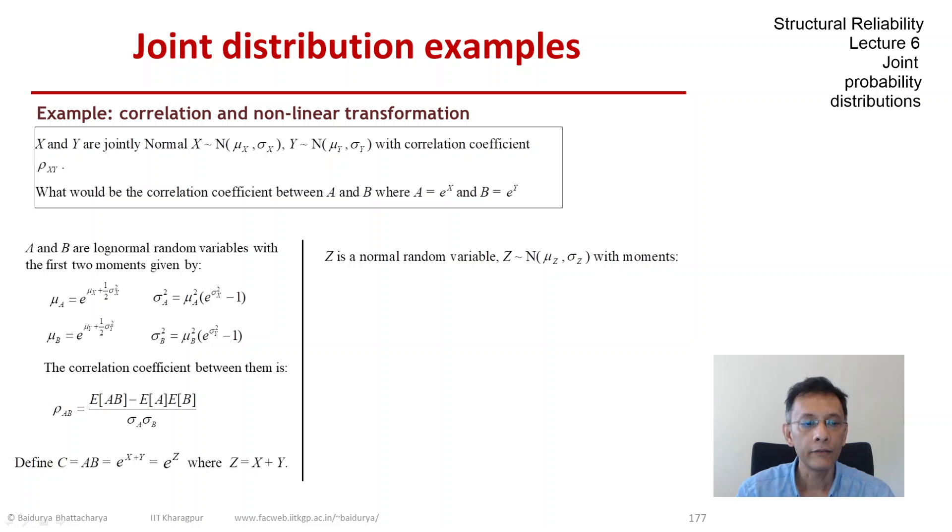If x and y are jointly normal, so is their sum z, and we just need to be able to find the moments of z. This is something we are going to see in the next lecture. The mean of z is the sum of the means, and the variance of z is the sum of the variances plus an additional term which comes from the covariance term. That's twice rho_xy sigma_x sigma_y.